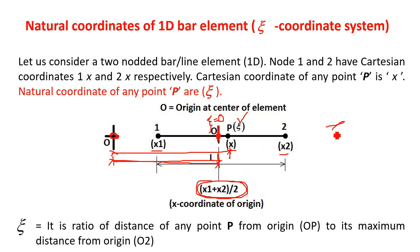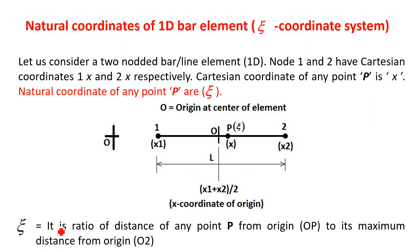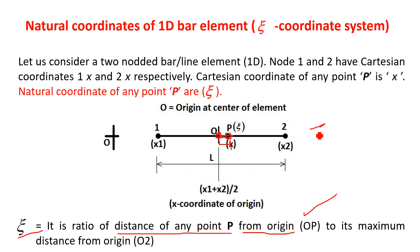Our question is: what is the value of ξ at node number 1, at node number 2, and at the center of the element? ξ is equal to the ratio of the distance of any point P from the origin O of natural coordinates — the distance OP — to the maximum possible distance of point P from that origin. So, ξ = OP / maximum distance from origin O.